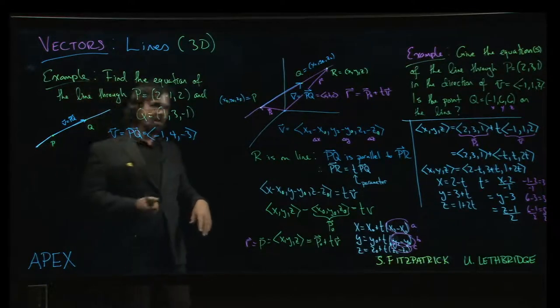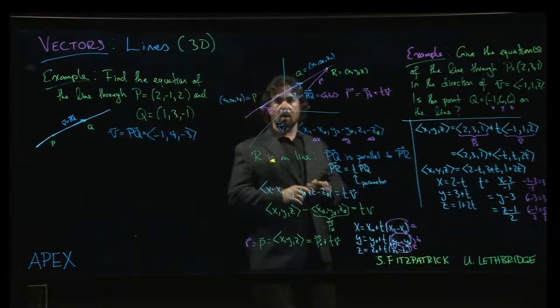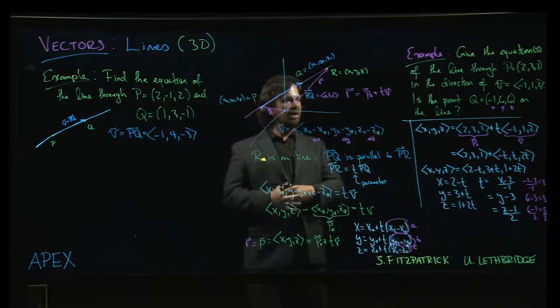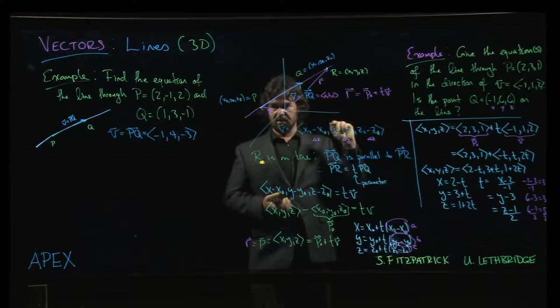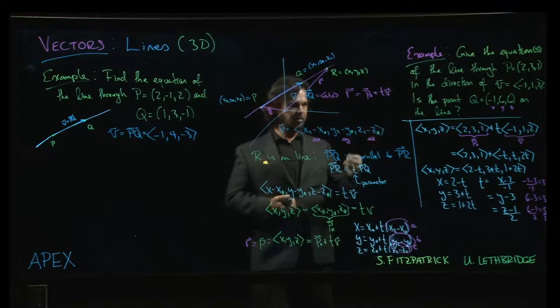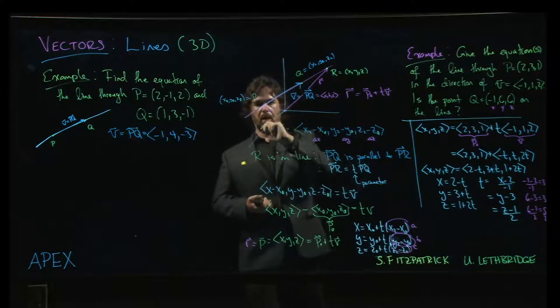Also, if you change the initial point on the line, that doesn't matter either. All that changes is the starting value for the parameter. It tells you when t is equal to 0, what point you're at.